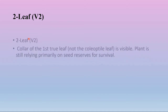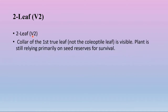The second leaf stage (V2): the collar of the first true leaf — not the coleoptile leaf — is visible in this stage, and the plant is still relying primarily on seed reserves for survival. This is the second leaf stage of the growth of maize.